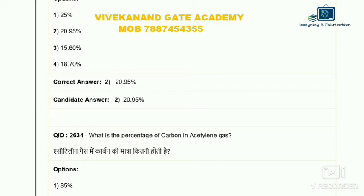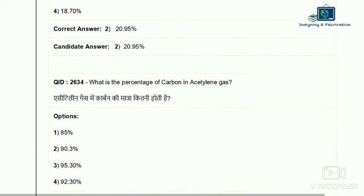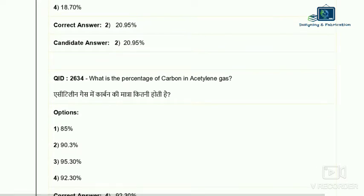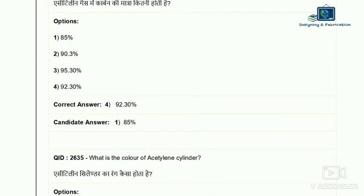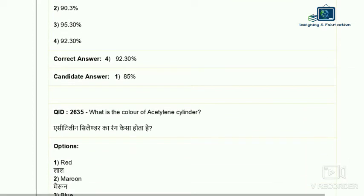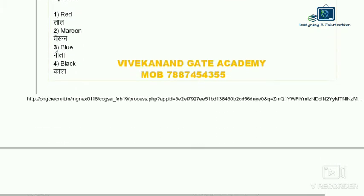Question 34: what is the percentage of carbon in acetylene gas? The chemical formula for acetylene is C2H2. The carbon content is 92.3% and hydrogen is 7.7%. So the correct answer is 92.3% — option four. Question 35: what is the color of the acetylene cylinder? The correct answer is maroon — that is the standard color.